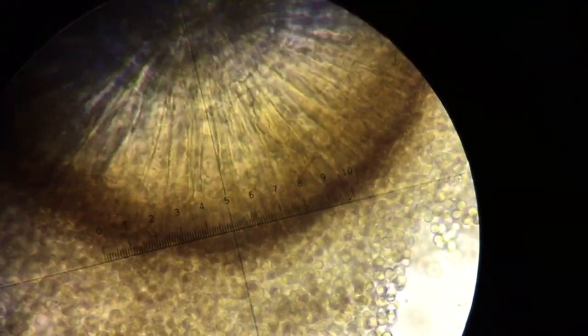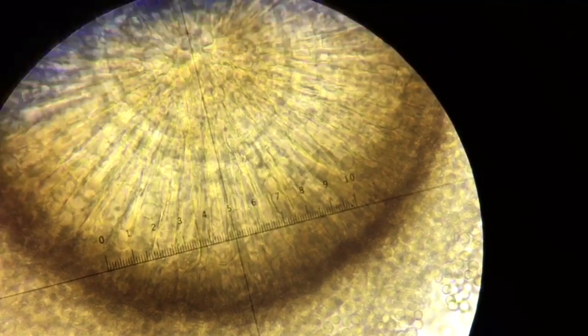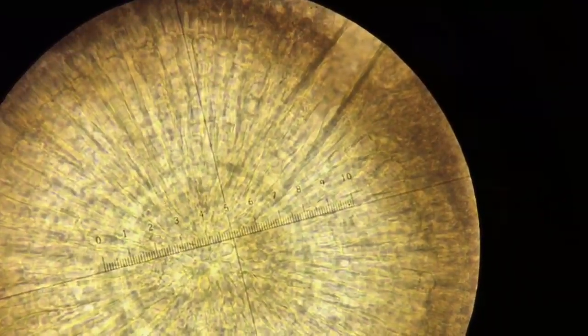Hopefully, as I zoom in and out here, we can see that we have two different cells: the metulae and then the phialides on the end, and then the spores that form chains coming off of it.